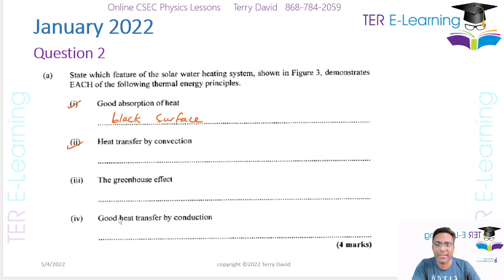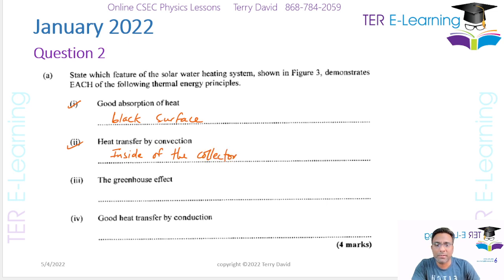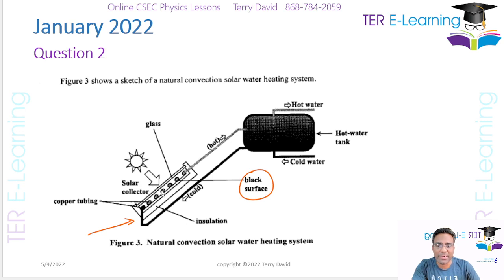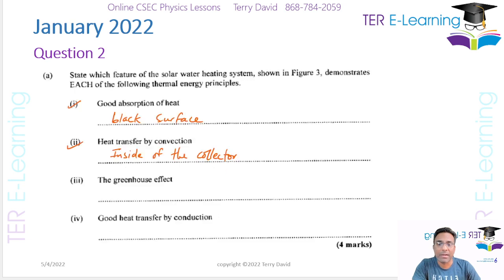The second part is heat transfer by convection — that is inside the collector. Remember, you have the solar collector here, so sunlight passes through your glass plate and that heat gets trapped on the inside. That's going to warm up the air inside the collector and the air is going to start to circulate.